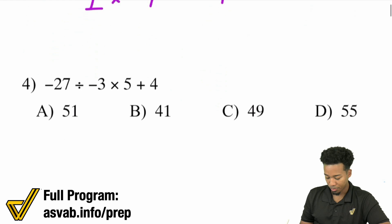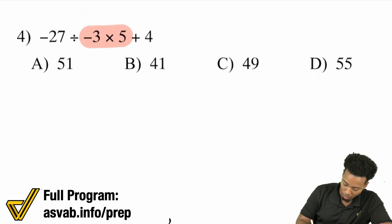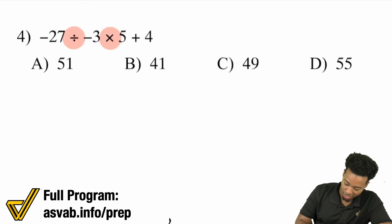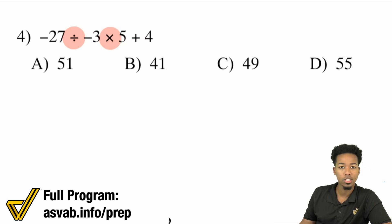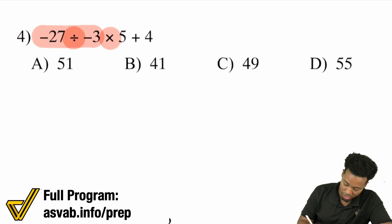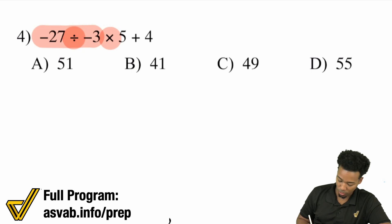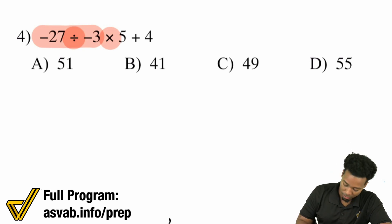Let's get into this next one. You may be looking at this and thinking we have to multiply first — be very, very careful. We see there's division and multiplication right there. We're going to look at division and multiplication, and remember it's whichever one comes first. Negative 27 divided by negative 3 comes first. A negative divided by a negative is a positive, and 27 divided by three is nine.